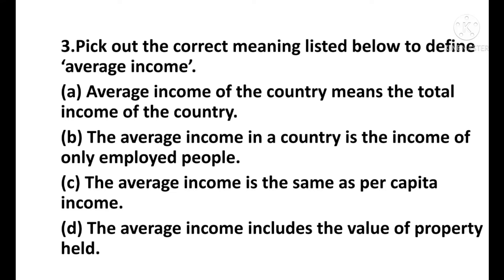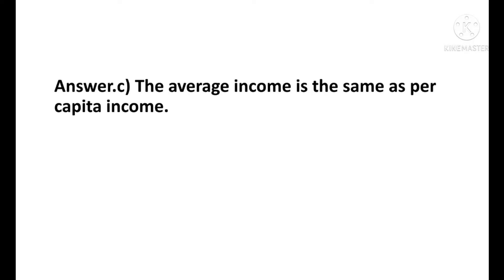Question number 3: Pick out the correct meaning listed below to define average income. Option A: average income in the country means the total income of the country. Option B: average income is the income of only employed people. Option C: the average income is the same as per capita income. Option D: the average income includes the value of property and health. The correct answer is C — the average income is the same as per capita income.